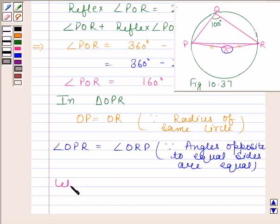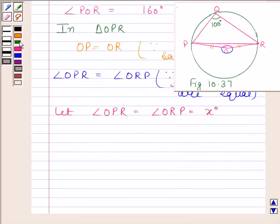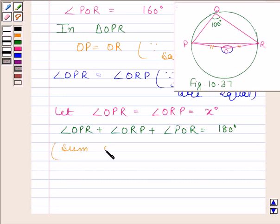Now, let angle OPR and angle ORP be equal to X degrees. Now, angle OPR plus angle ORP plus angle POR is equal to 180 degrees, because sum of all angles of a triangle is 180 degrees.